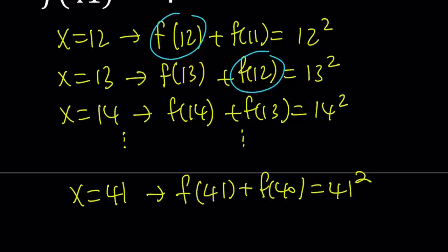So I have to work in such a way that I can cancel out all the terms except for f(11) and f(41). So how can I do that? We're going to be using an alternating sum here. Here's how we can do it.